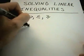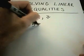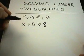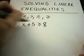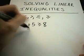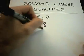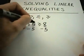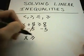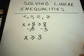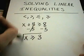For example, suppose I wanted to solve x + 5 ≥ 8. I want to get x by itself, so I subtract 5 from both sides. It cancels on the left, and I get x ≥ 3. That will be my solution set.